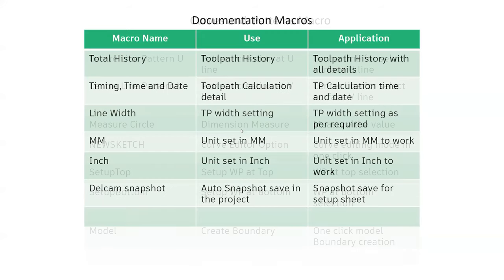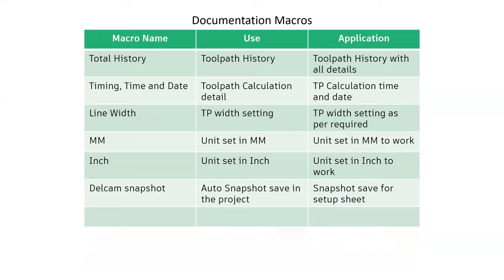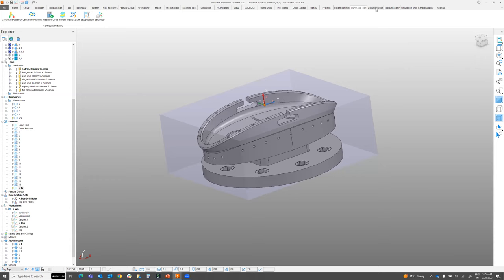Moving to the third category: Documentation Macros. These are useful for toolpath history, checking when a toolpath was calculated including time and date, changing project units between mm and inches, and taking screenshots of the open project for setup sheets. I'll explain each documentation macro.